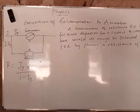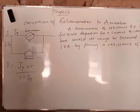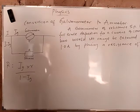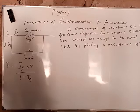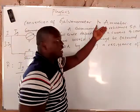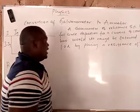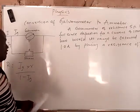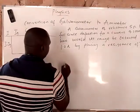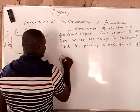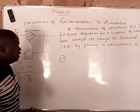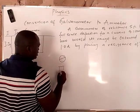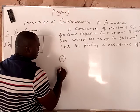Welcome class. Today we are looking at galvanometer conversion, and we want to see how to convert a galvanometer to an ammeter. First of all, I want you to know two things: this is the symbol of a galvanometer, and this is the symbol of resistance.